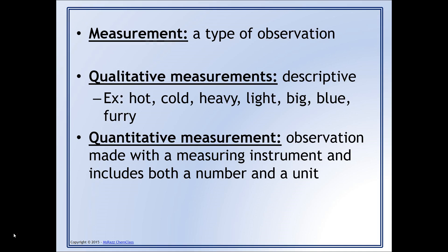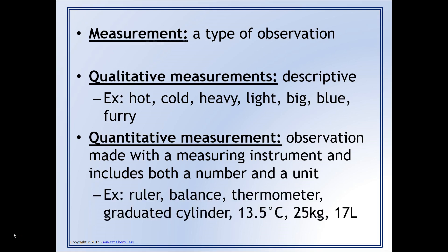Quantitative measurements, however, are the opposite in that these are observations made with a measuring instrument and include both a number and a unit. For example, using a ruler, a balance, a thermometer, graduated cylinder, these are all measuring instruments that we use to make these observations.